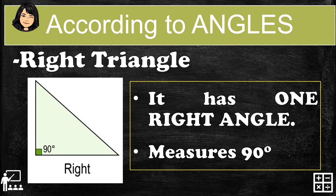Looking at the different triangles according to angles, the first is the right triangle. As you can see on the image, it has one right angle and it measures 90 degrees.